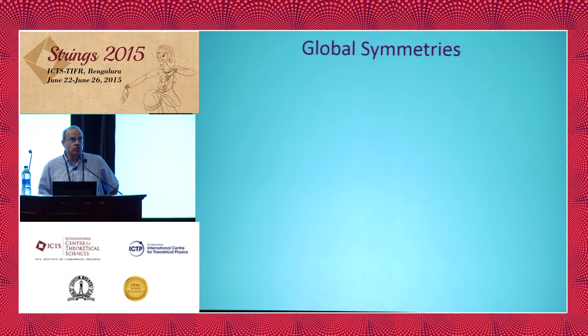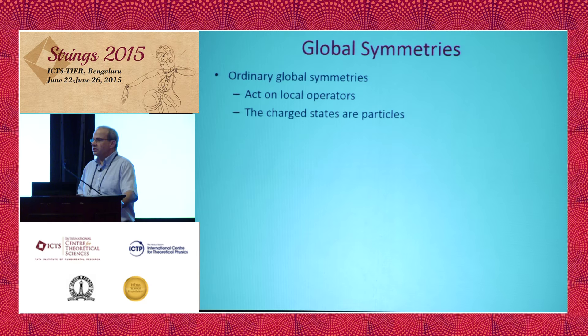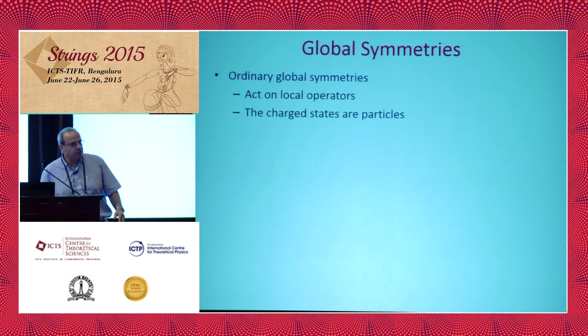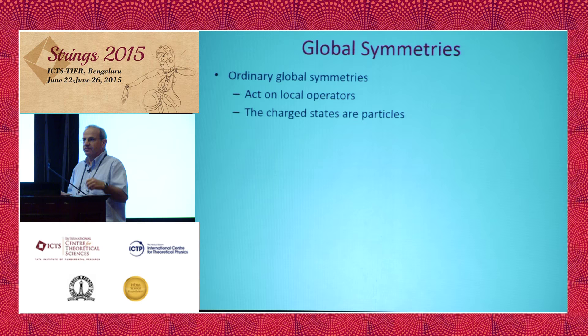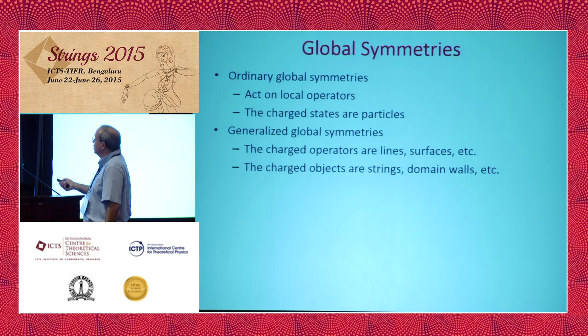We'll be discussing global symmetries as opposed to gauge symmetries. Ordinary global symmetries are very useful — they help us organize our information and can be used to classify local operators, whether the symmetry is spontaneously broken or not. The charged states for ordinary symmetries — meaningful only if the symmetry is not spontaneously broken — are particles. The generalization will be to extended objects, where the charged operators, instead of being point-like, will be associated with lines or surfaces, etc.